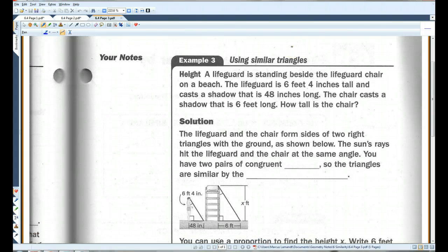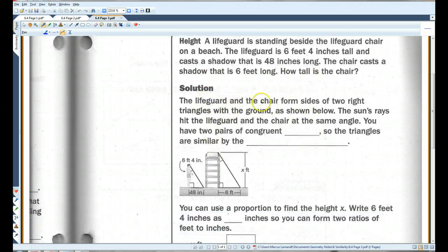A lifeguard is standing beside the lifeguard chair on a beach. The lifeguard is 6 feet 4 inches tall and casts a shadow that is 48 inches long. The chair casts a shadow that is 6 feet long. How tall is the chair?